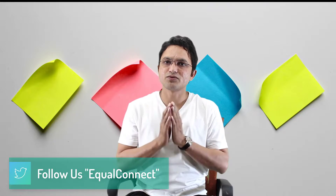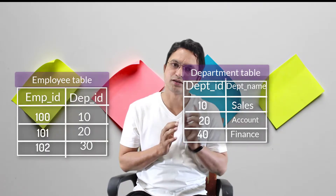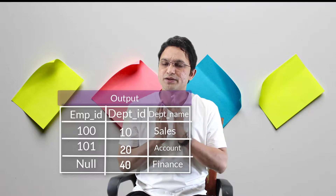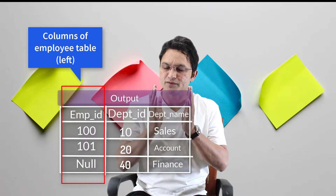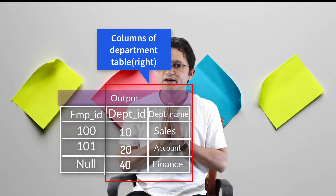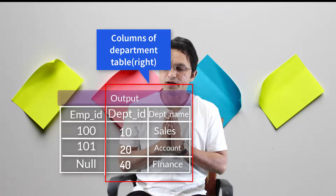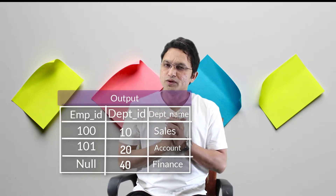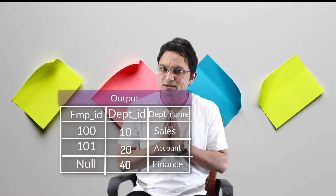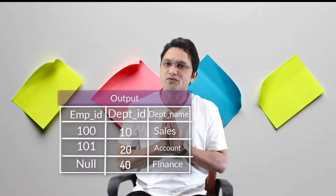Now let's understand Right Outer Join with a practical example. If you have Table 1 and Table 2 and join them using Right Outer Join, you can see the output on screen. A few columns are from the left hand side table and some columns are from the right hand side table. You may also notice some null values. Let's understand how exactly this output table is formed and how Right Outer Join works internally.